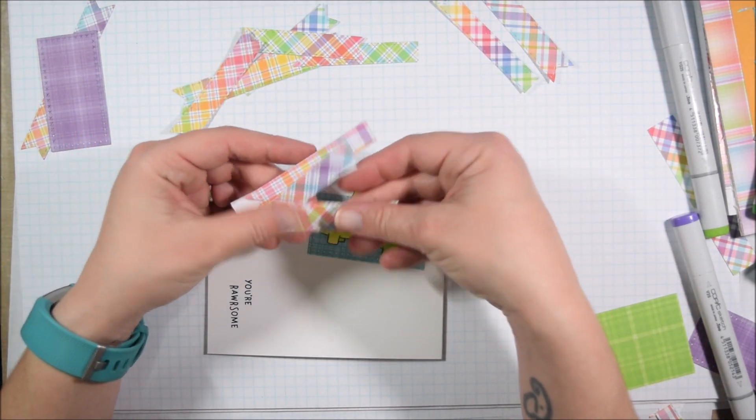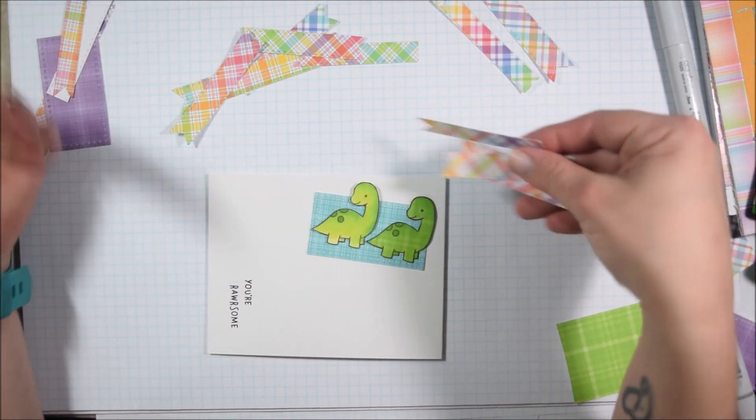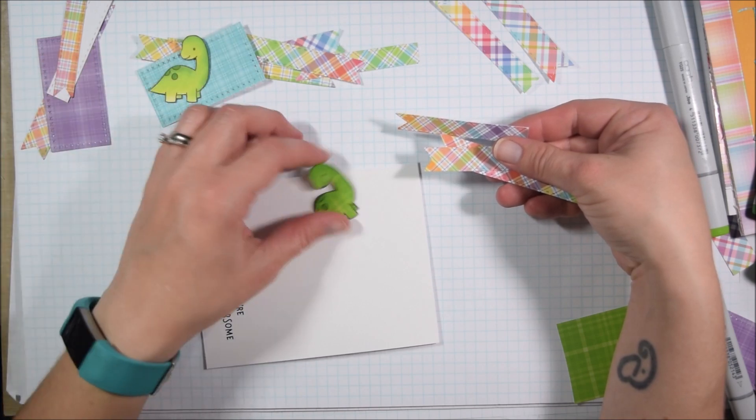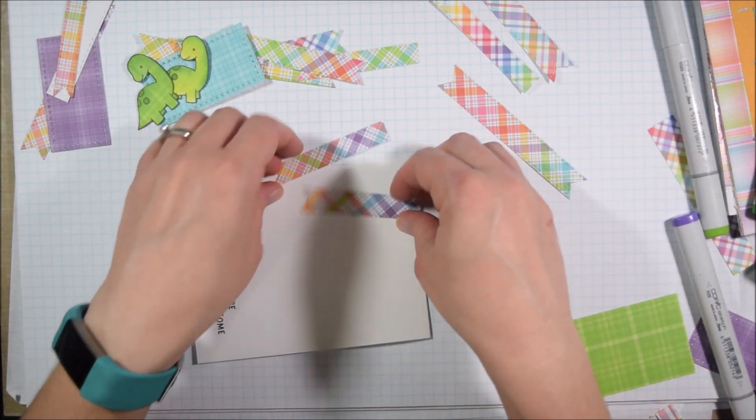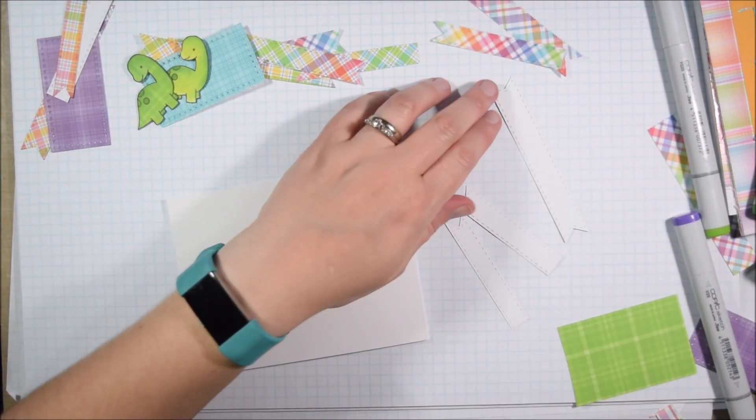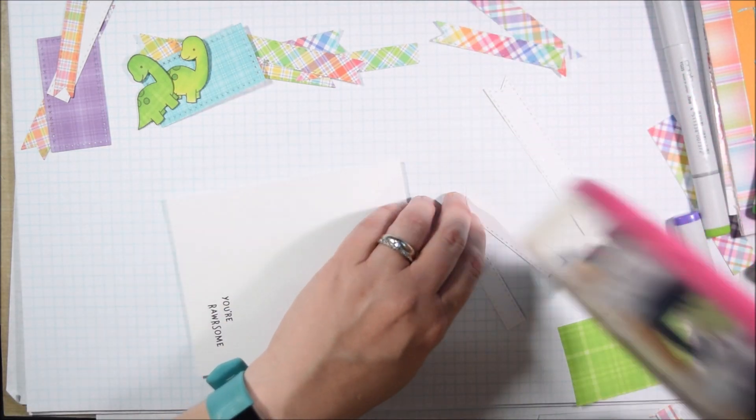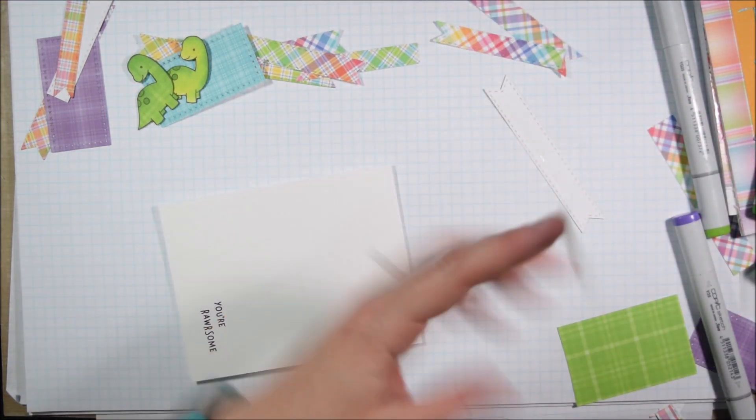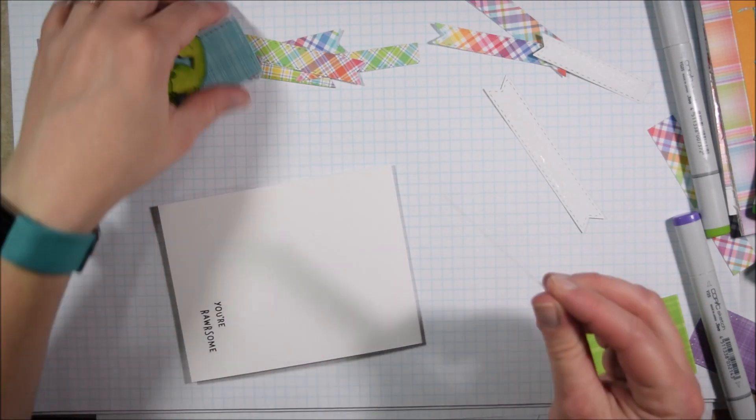So I'm not going to measure anything, I'm just going to kind of eyeball it. Also, I die cut them from the semi-solid papers, but the semi-solid papers are also what I'm using for that rectangle.